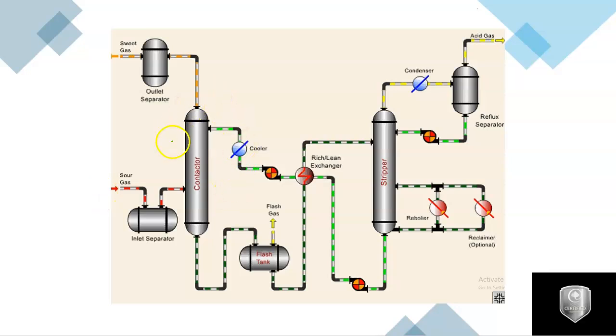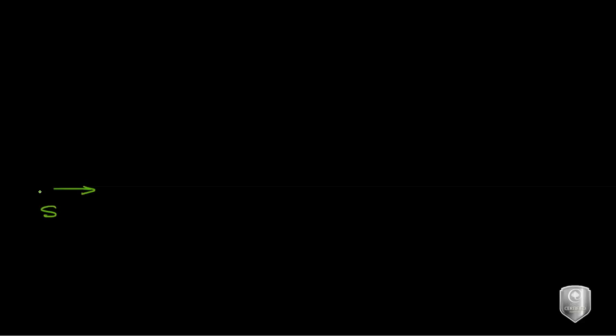This is the process flow diagram of the sweetening process using a chemical solvent. At the beginning we are going to have a sour natural gas, so this is our feed — sour natural gas.